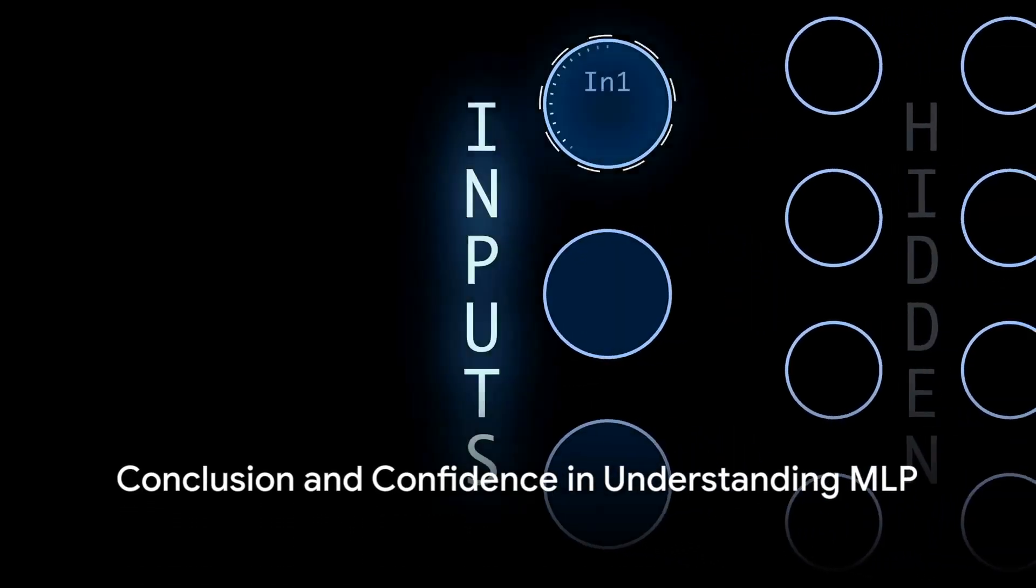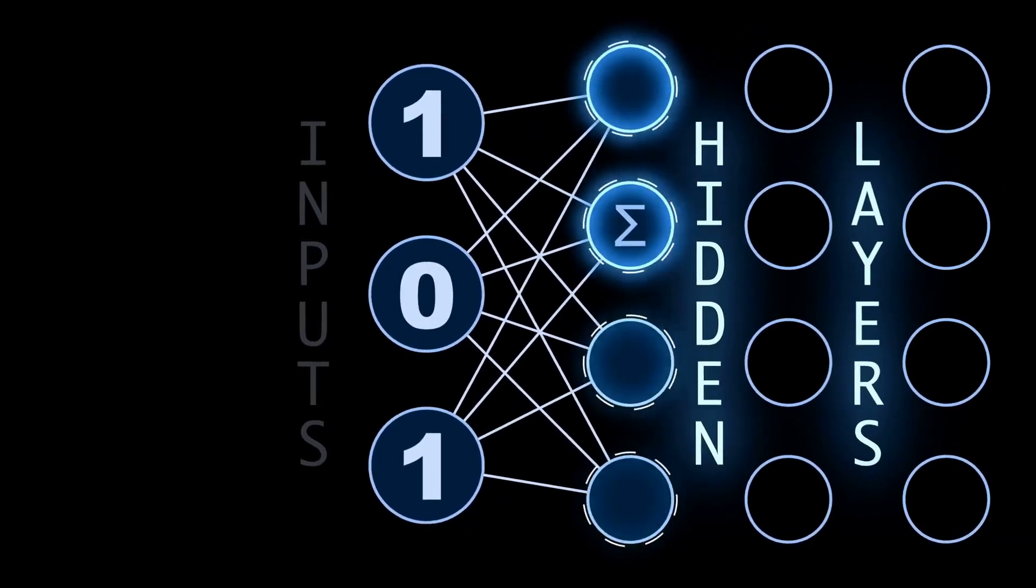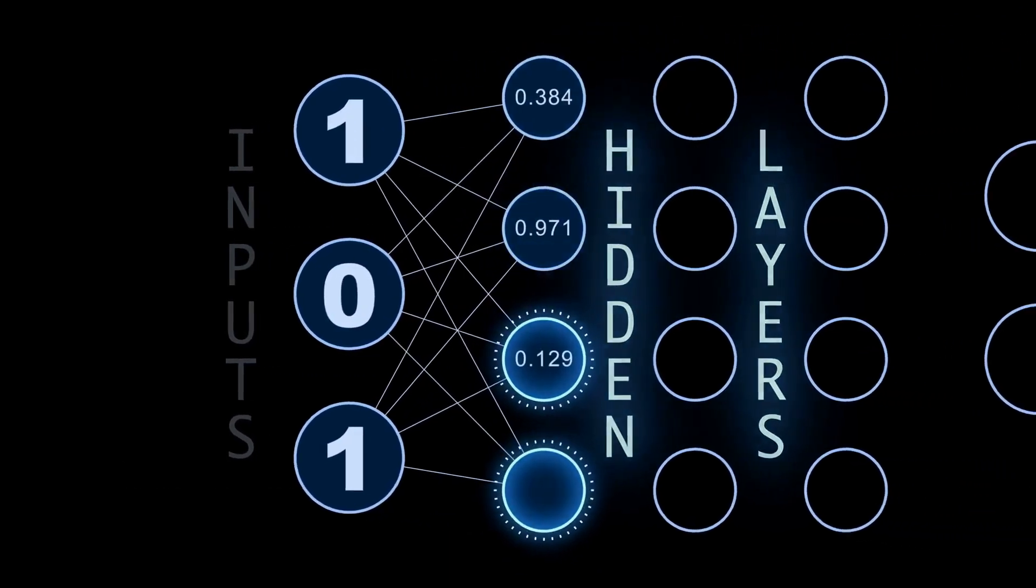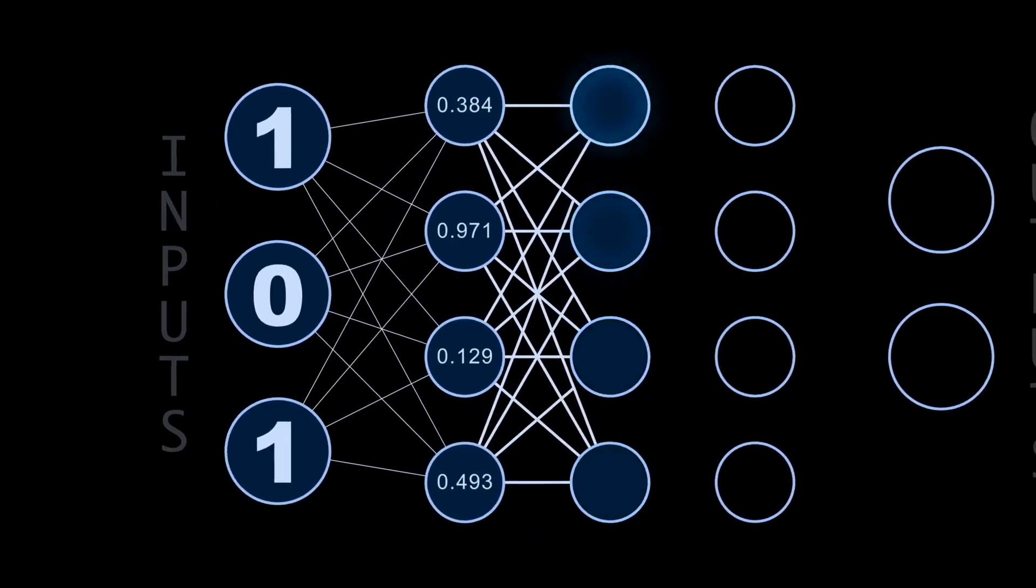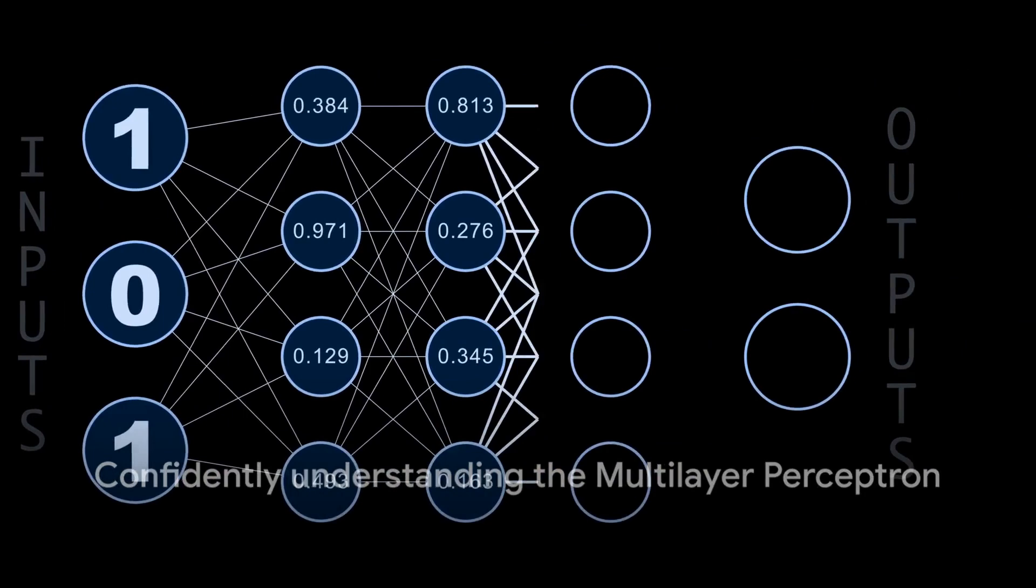So, the next time someone mentions a multi-layer perceptron, you can confidently say that, Ah, you mean that self-correcting artificial brain that's revolutionizing machine learning? Yes, I know what that is. And you'll have the satisfaction of knowing you're not just spouting techno jargon, but you truly understand what a multi-layer perceptron is all about.